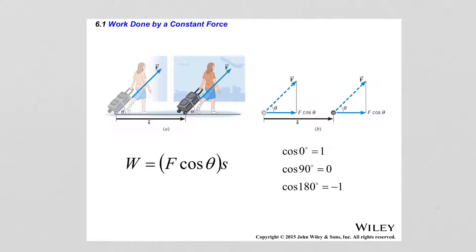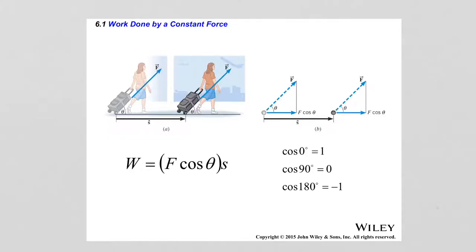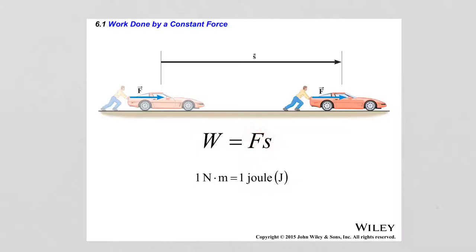By the definition of work — work is the product of force and displacement — if the force doing the work is the x-component of F, then that is F cosine of theta multiplied by the displacement S, which gives the work done by this force.